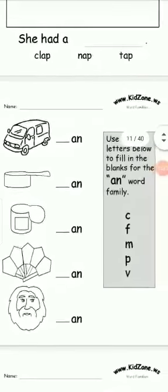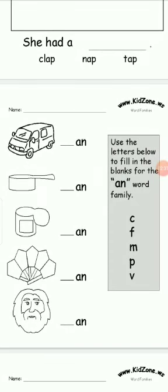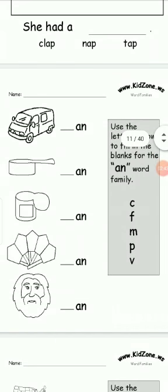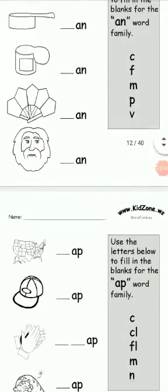Use the letters below to fill in the blank for -an word family. We have pictures given, and this is the -an word family. First picture is van, so we have to put V in the blank. Complete all of these in the same way.